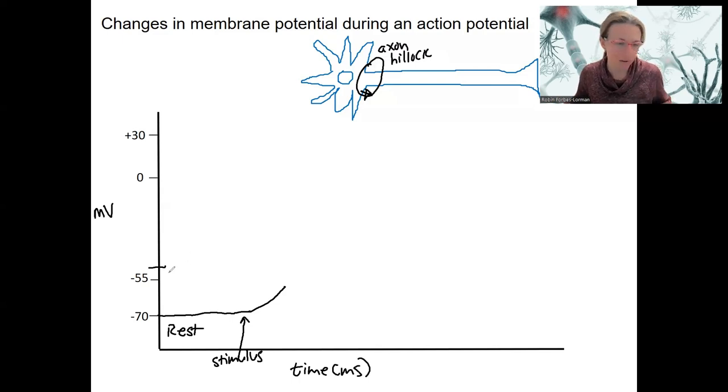Threshold is right about right about here. Threshold is the level at which there will be an action potential. I'm going to draw this in a different color here. So here's threshold. Ideally a straight line. If we've reached threshold with a sufficient stimulus, enough sodium flows in. Now we've got an action potential.